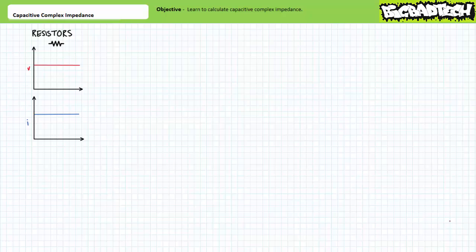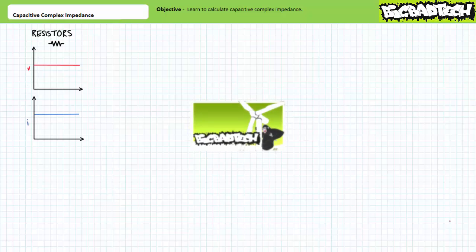Good day, and welcome to Big Bad Tech. I'm your instructor, Jim Pytel, and today's topic of discussion is capacitive complex impedance. Our objective is to learn how to represent capacitors as complex impedances for the purposes of AC circuit analysis. This lecture operates on the presumption the viewer has watched the resistive complex impedance lecture available at the Big Bad Tech channel. If you haven't watched that lecture yet, please take the time to do so now.